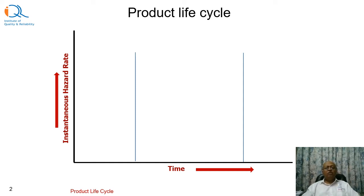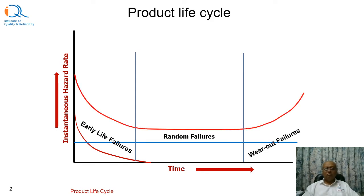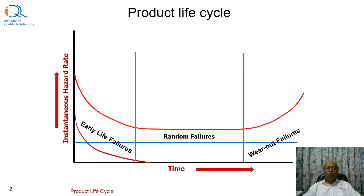There are three distinct phases of product life cycle: first phase, early life failures; second phase, random failures; third phase, wear out failures. If you take the sum total of all three, you will see that the combined hazard rate follows something like a bathtub, and therefore this is called a bathtub curve.